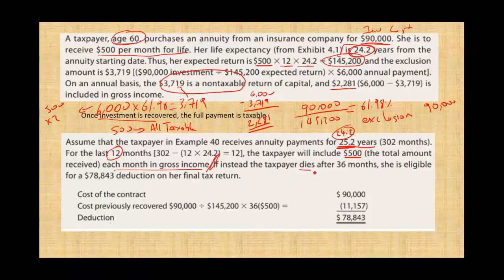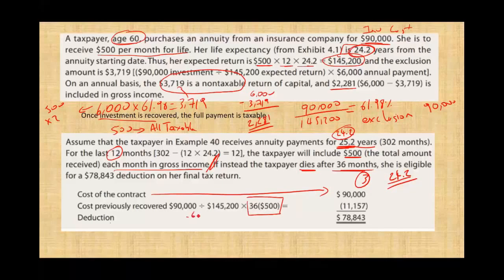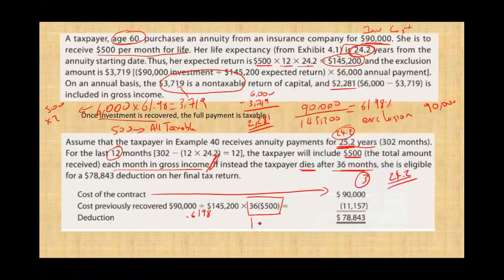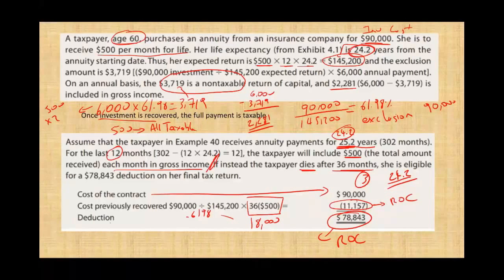On the other hand, if the taxpayer dies after 36 months — that's 3 years — they were estimated to live 24.2 years but only lived 3 years. You're going to have a deduction. The cost of the contract is $90,000. The cost previously recovered: you received 36 payments times $500, which is $18,000. Applying the 0.6198 ratio, $11,157 of that is return of capital. You still have unrecovered return of capital, so you will have a deduction of $78,843 that year, because this is money you invested that you did not get back.